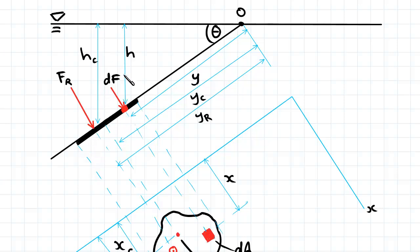So we're going to have to integrate dF, which is the force on a small area dA. We've got all our distances there. So Y is a variable, YC is the distance from the origin to the centroid of the shape, and YR is the point of action which we'll be looking at in the next video.